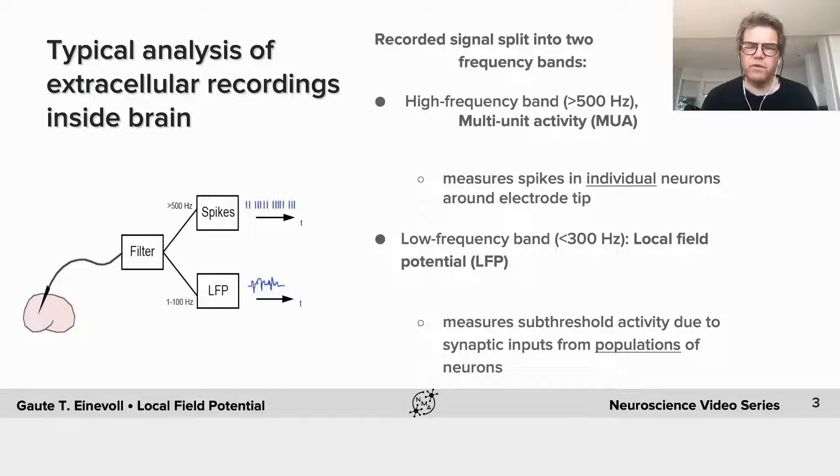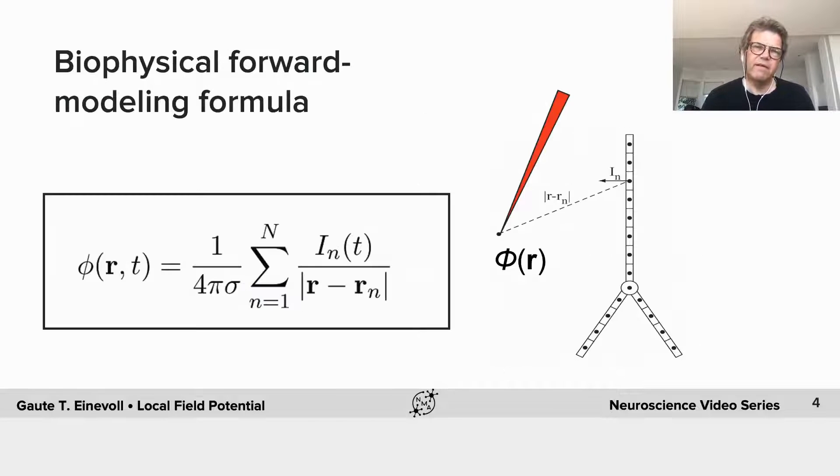However, a good thing is that we know the link between the activity of neurons and these extracellularly recorded potentials. And the link goes via the transmembrane currents of the neuron. So often when you simulate the neural activity, you simulate your interest in the membrane potential in the soma, because that's where it's decided whether this neuron generates an action potential or not.